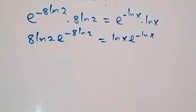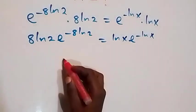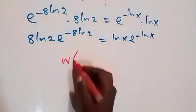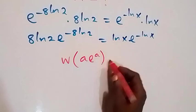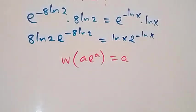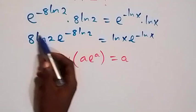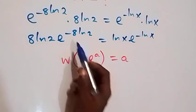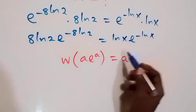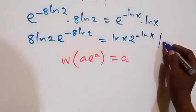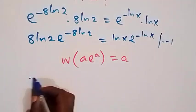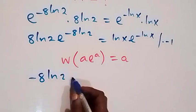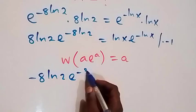Then we apply the Lambert W function. When we have W of a times e raised to power a, this is the same thing as a. From what we have here, the power is almost the same as the coefficient, just different by a minus sign. So we multiply through by minus 1, and here it becomes minus 8 ln 2 times e raised to power minus 8 ln 2.